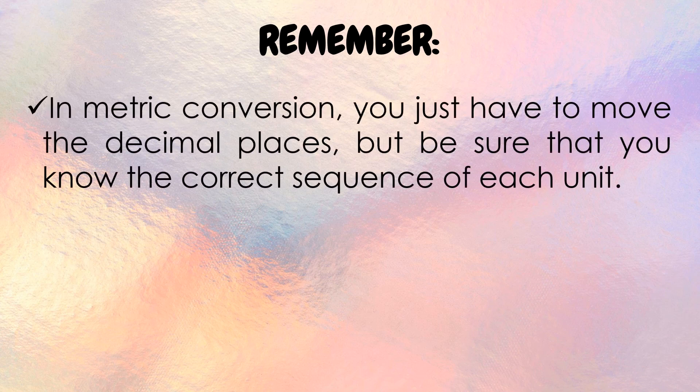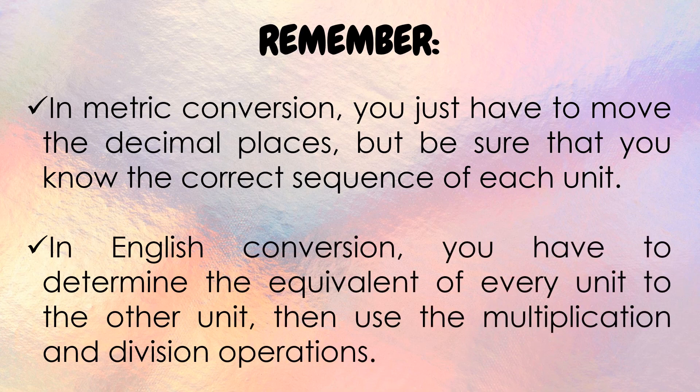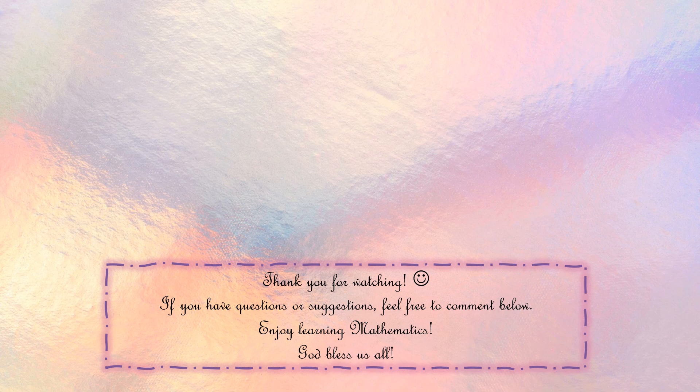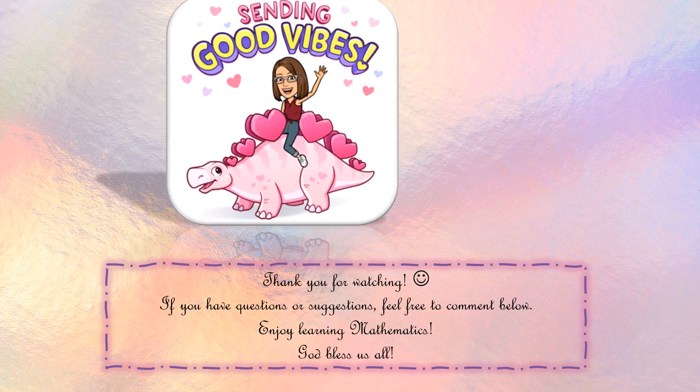Let us summarize what we have learned about measuring mass or weight. In metric conversion, you simply move the decimal point — but make sure you know the correct sequence of each unit. In the English system, determine the equivalent of every unit, then use multiplication and division. Thank you for watching — I hope you learned about measuring weight or mass using the metric and English systems. If you have questions or suggestions, feel free to comment below. Enjoy learning Mathematics — God bless us all!